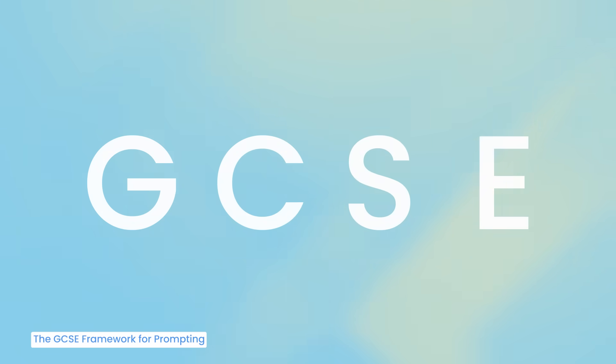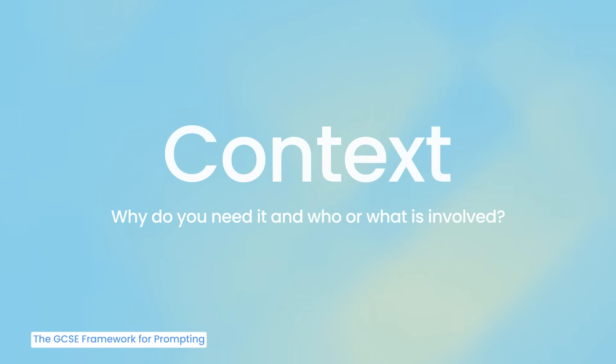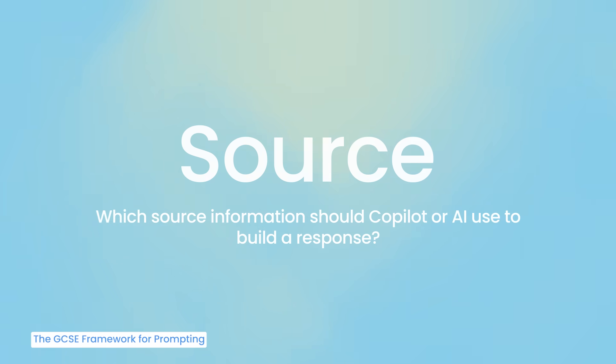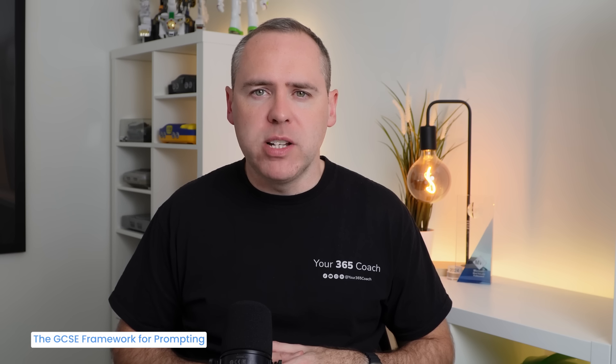We can break it down into four areas. The first is the Goal — what is the goal of the prompt we're going to send to Copilot? Next is Context — what's the context of the scenario I'm working with? Then there are the information Sources — sources of information we could give Copilot to generate a better response, maybe a document or a website. And finally, E is for Expectations — with the response that comes back from Copilot, what are you expecting? Not giving Copilot the answer, but rather the form of that response — maybe a table of suppliers, a bullet point list, a paragraph, or an email. Being clear with expectations ensures better results.